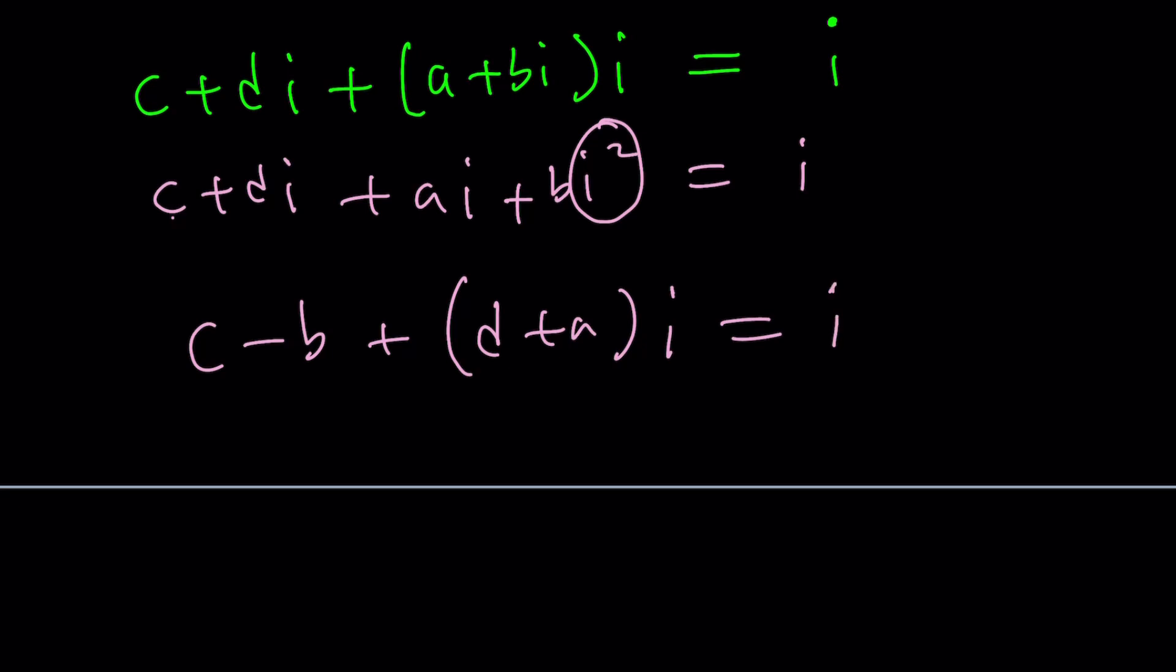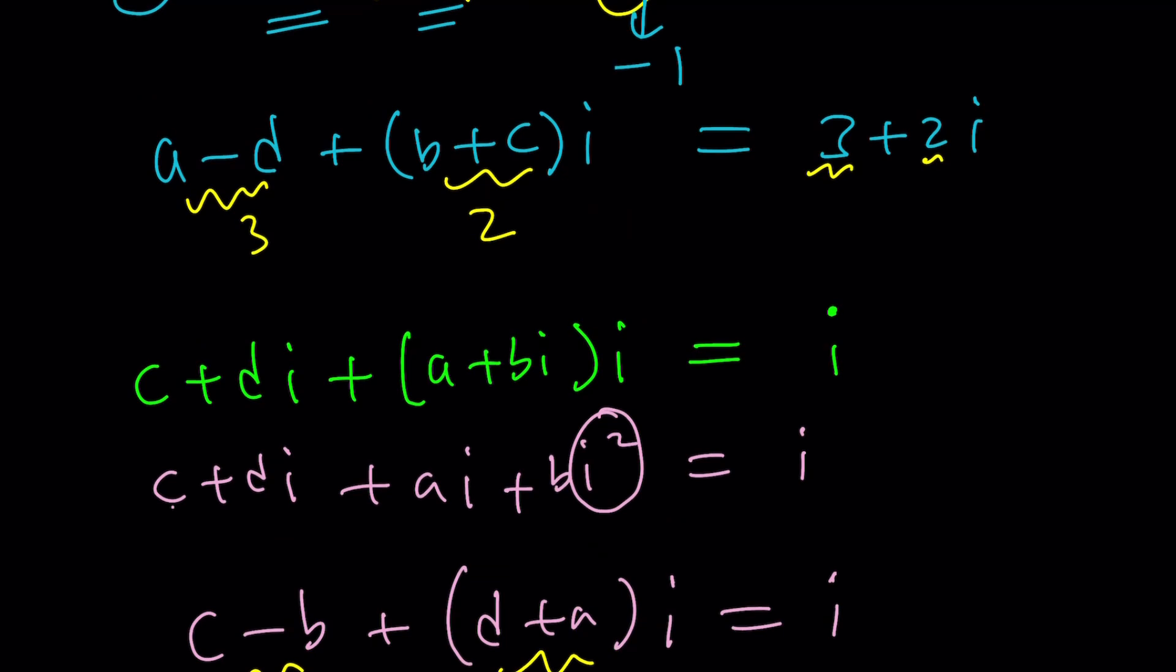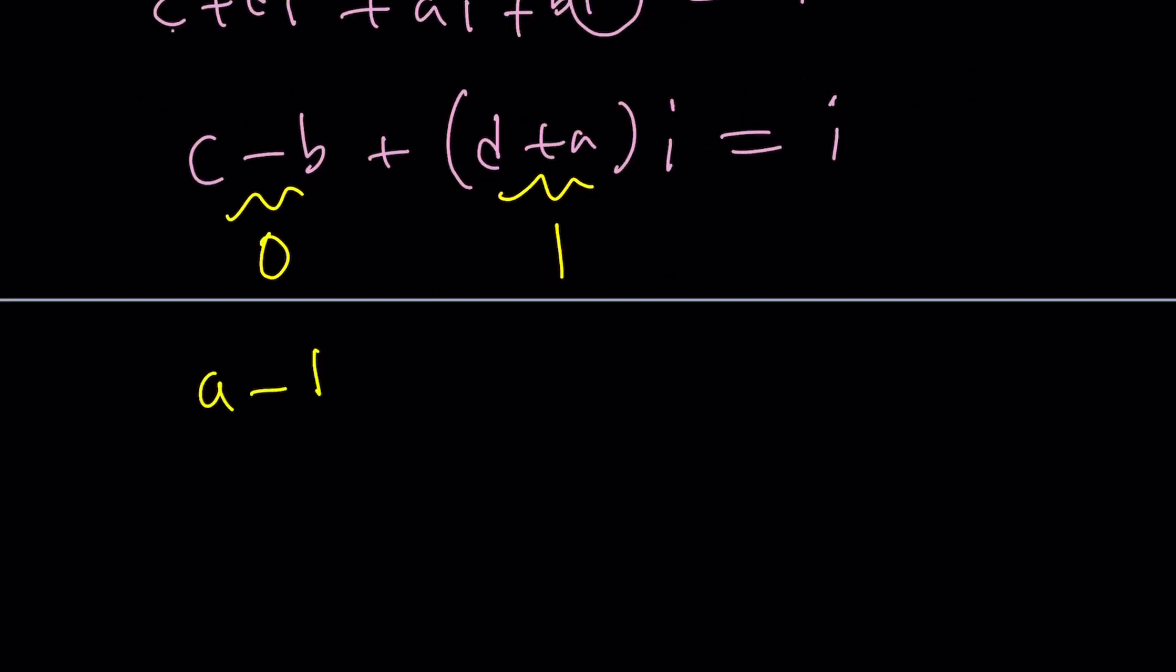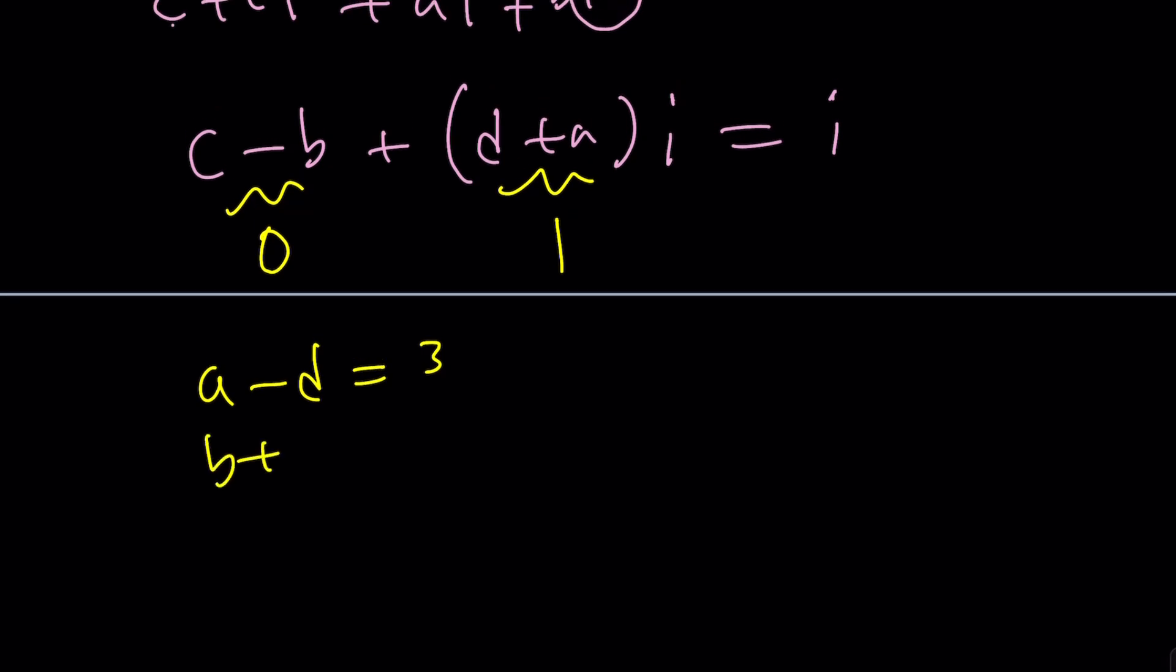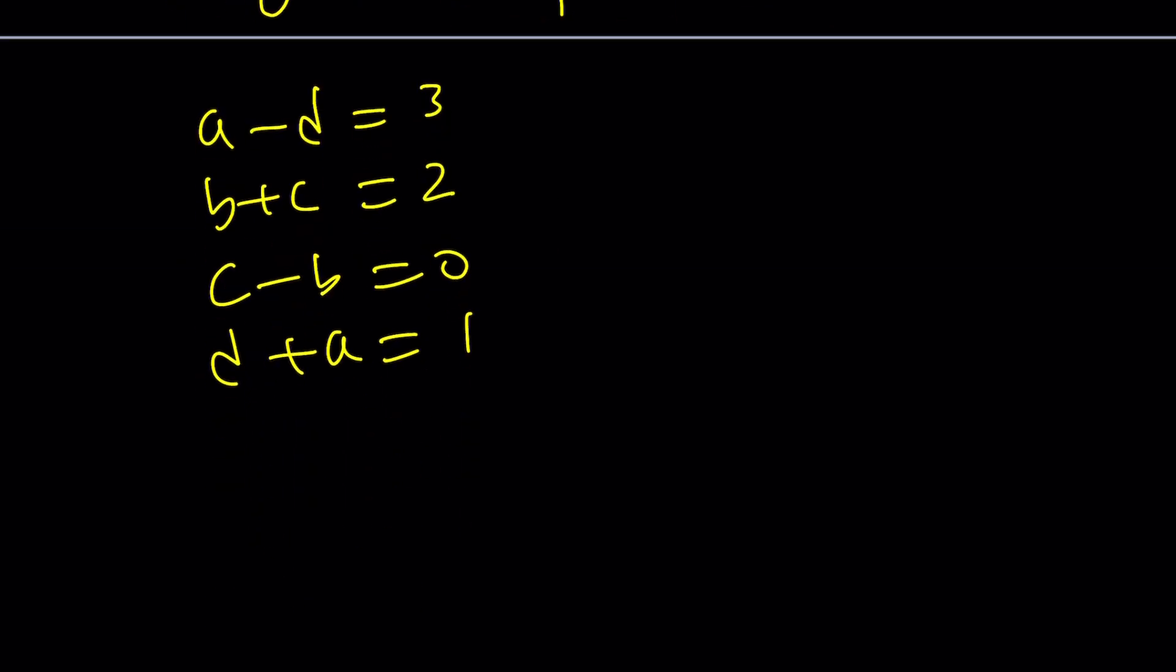Great. Now we have the same thing. Wait a minute. There's nothing real on the right hand side, so it's 0. And it's supposed to be 1. So we're going to put all these equations together. a minus d equals 3. And then b plus c equals 2. And then c minus b equals 0. And d plus a equals 1. I trust you guys. You can definitely solve the system.